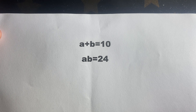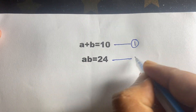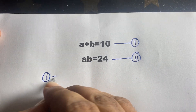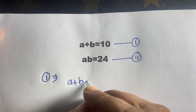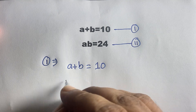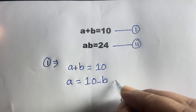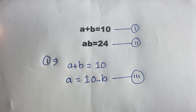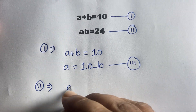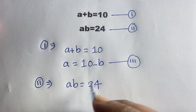In this math question there are two equations. This is our first equation and this is our second equation. The first equation is a plus b is equal to 10, so a is equal to 10 minus b. This is our third equation. Our second equation is ab is equal to 24, and a is equal to 10 minus b.